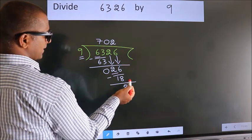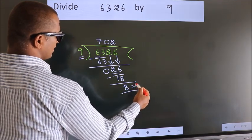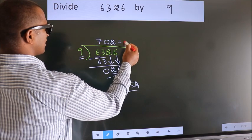No more numbers to bring down. So we stop here. This is our remainder. This is our quotient.